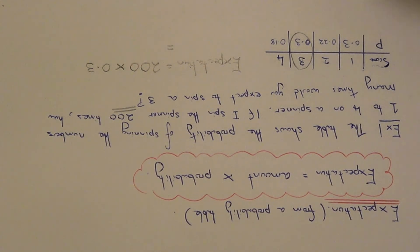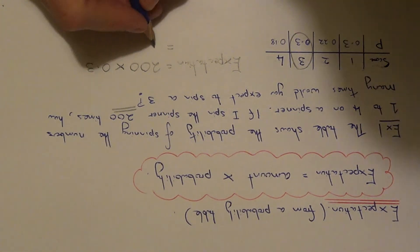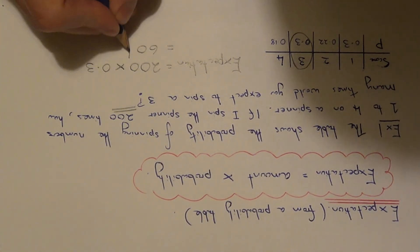We just need to work this out now. You can type this on your calculator. 200 times 0.3 should give you 60 times.